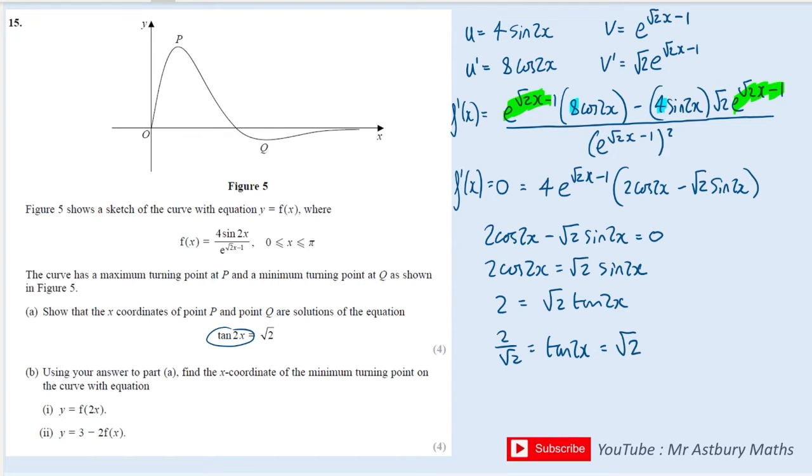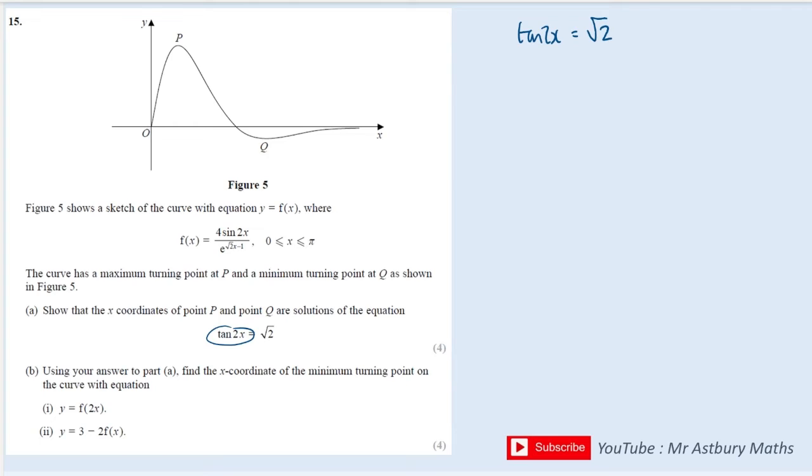Okay, the next part of the question asks me to work out the x-coordinate of the minimum turning point of these two particular equations. I'm going to grab some more space. Okay, so I'm going to need to solve this equation to find p and q, and then I will transform that minimum point afterwards.